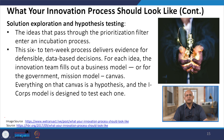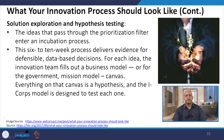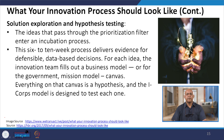What should your innovation process look like? Solution exploration and hypothesis testing: ideas that pass through the prioritization filter enter an incubation process. This six to ten week process delivers evidence for definable data-driven decisions for each idea. The innovation team fills out a business model canvas — or for government, a mission model canvas. Everything on that canvas is a hypothesis, and the I-Corps model is designed to test each one.